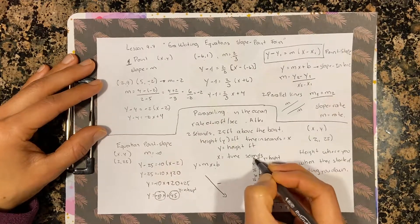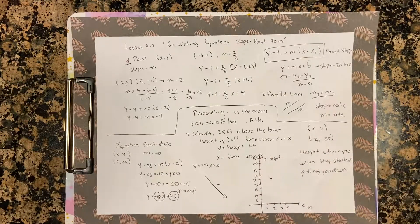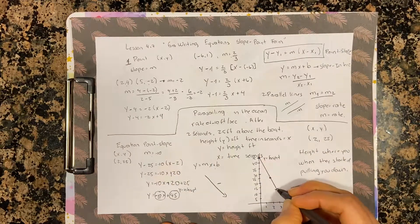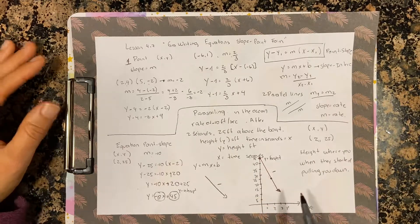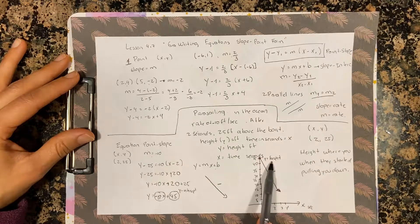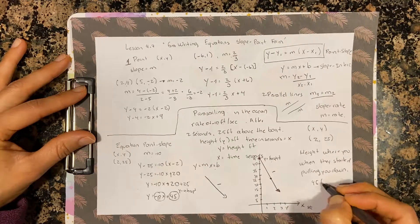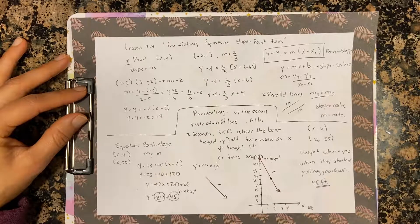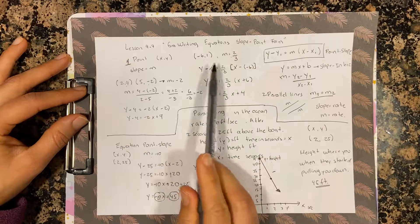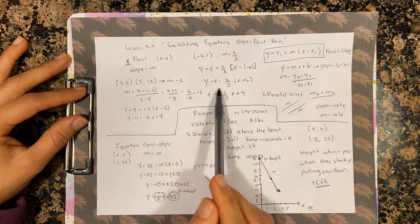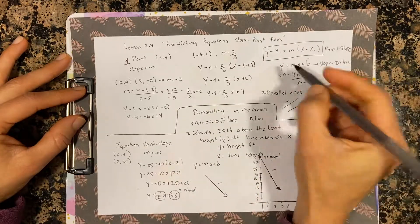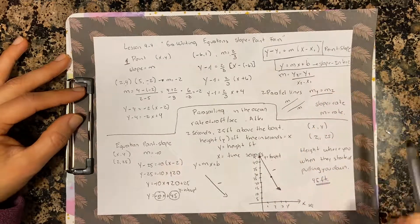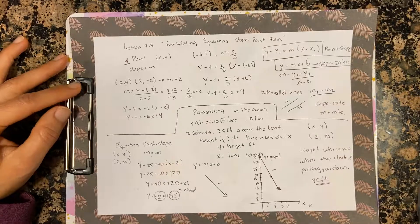So the y-intercept is 45 feet — that is how high you were when you stopped parasailing and they started pulling you down. The graph goes downward (negative slope). If you are given two points and a slope, you can write it in point-slope form and then solve for y to get slope-intercept form. I hope that helps. Have a good day.